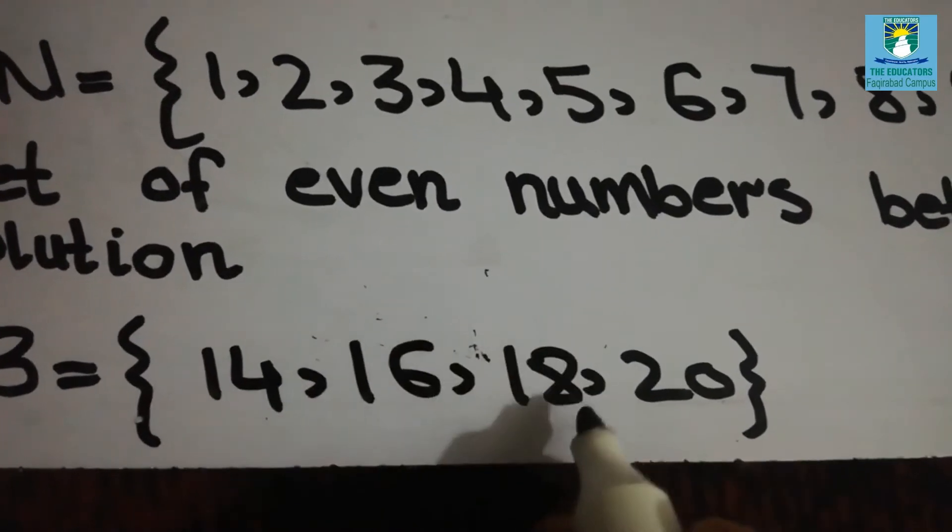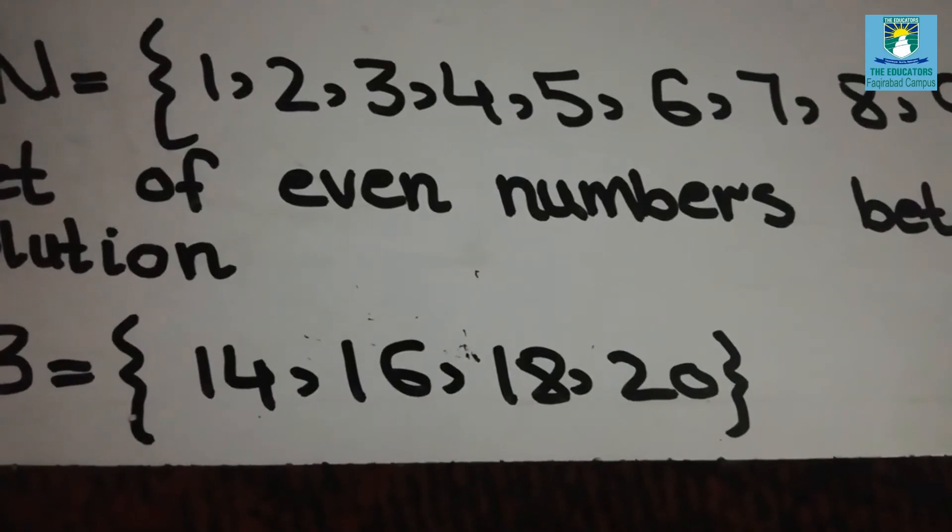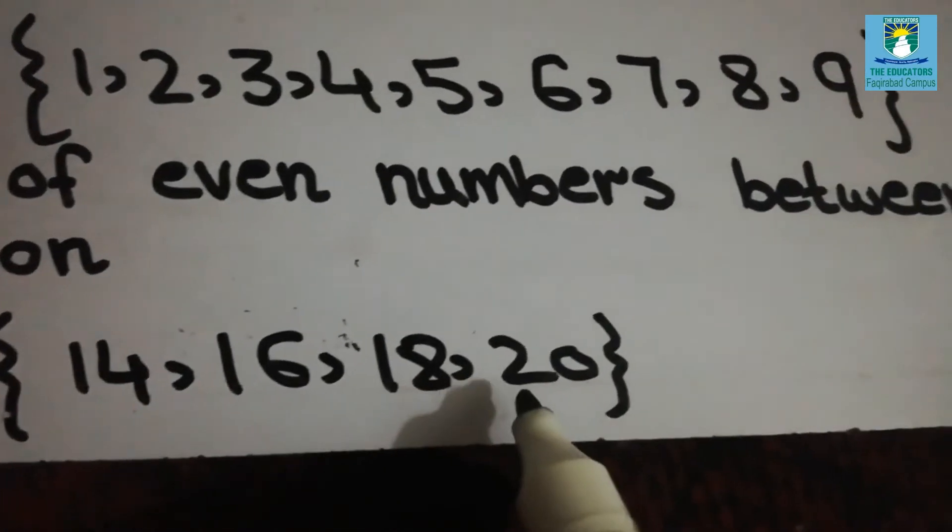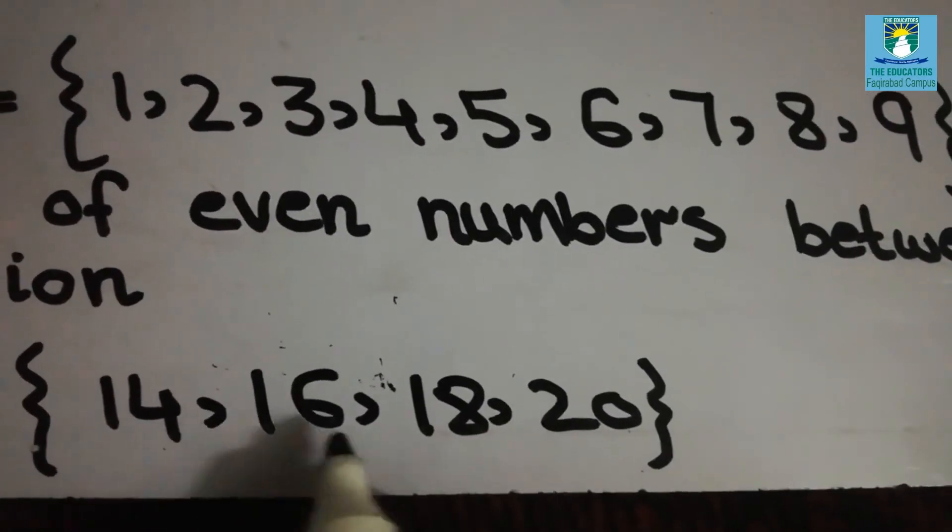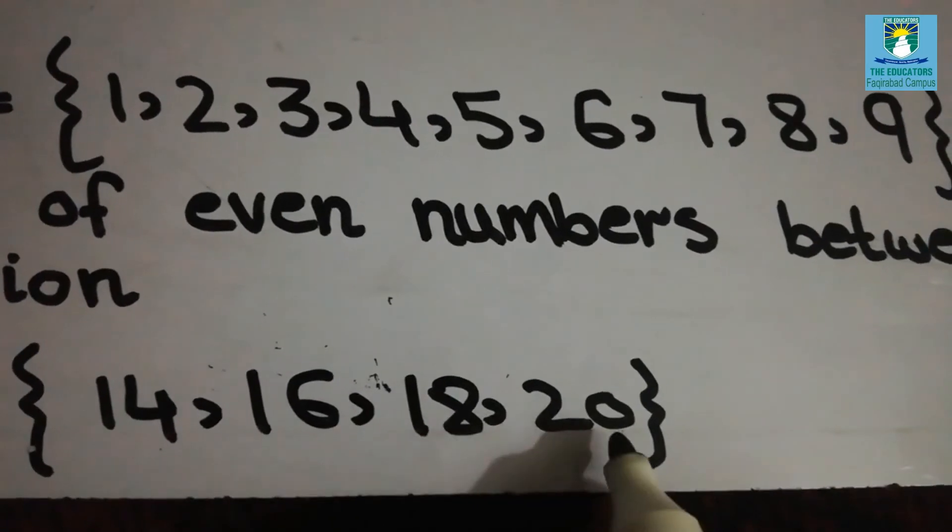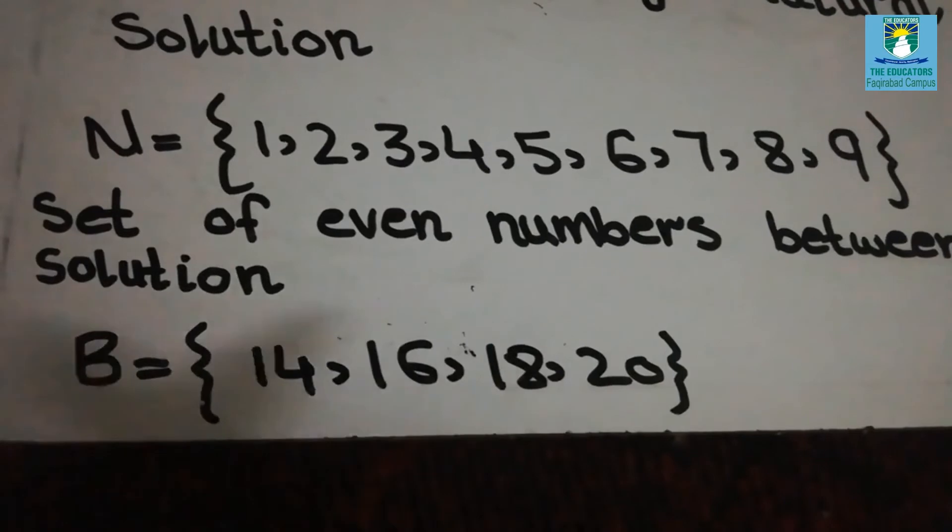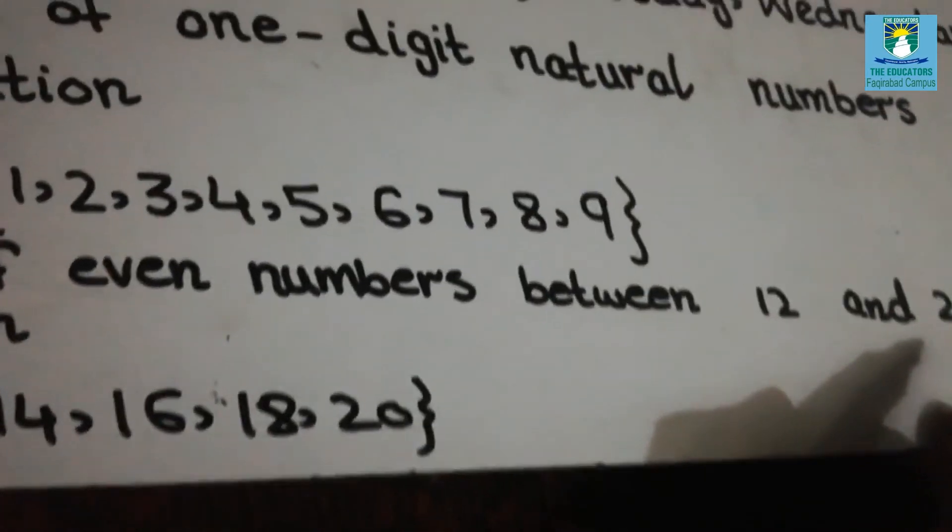It's an even number. Next. After 16, 18 will come. It's also an even number. And the last one is 20. So we will write here 14, 16, 18 and 20. These are the even numbers which come between 12 and 21.